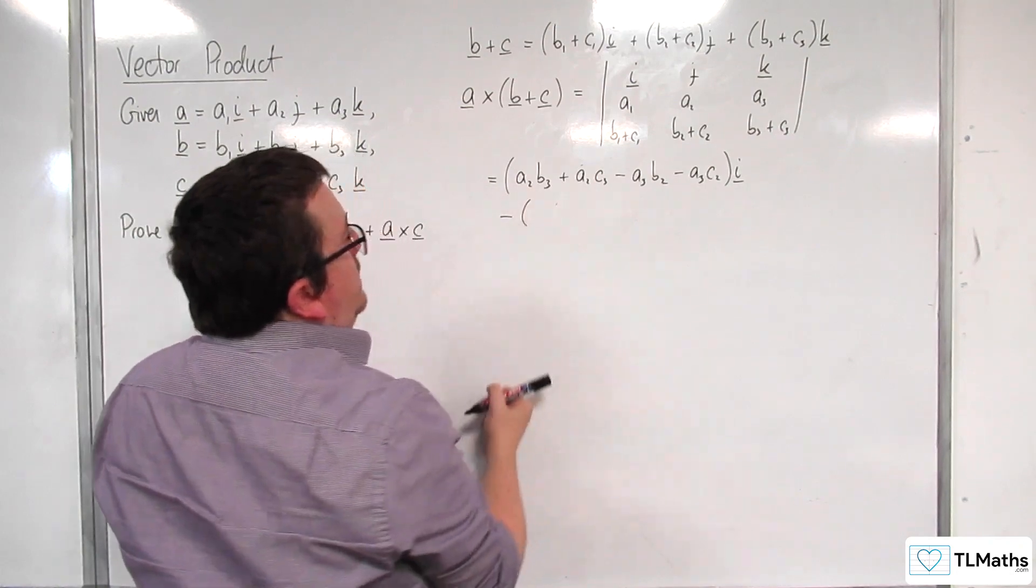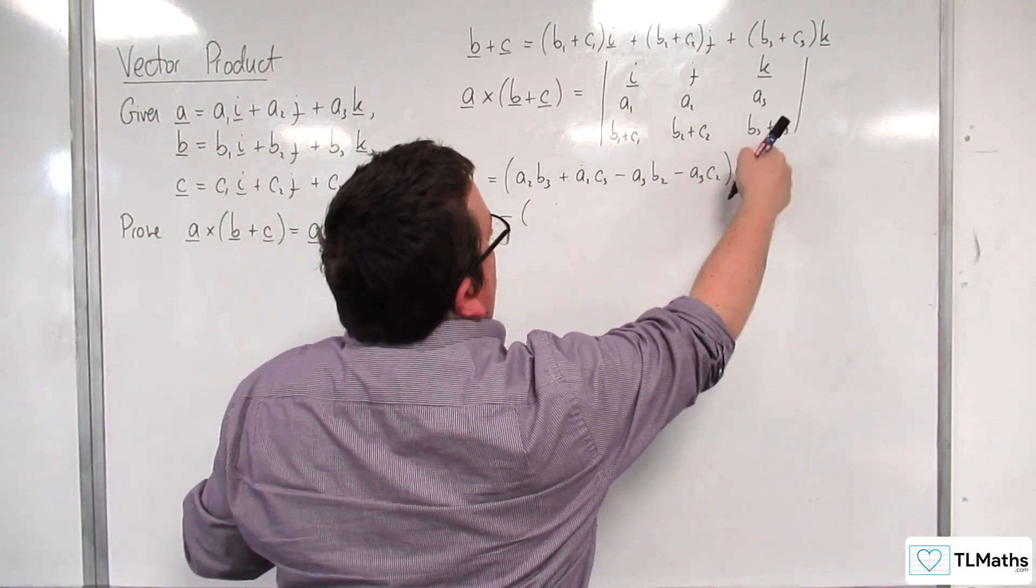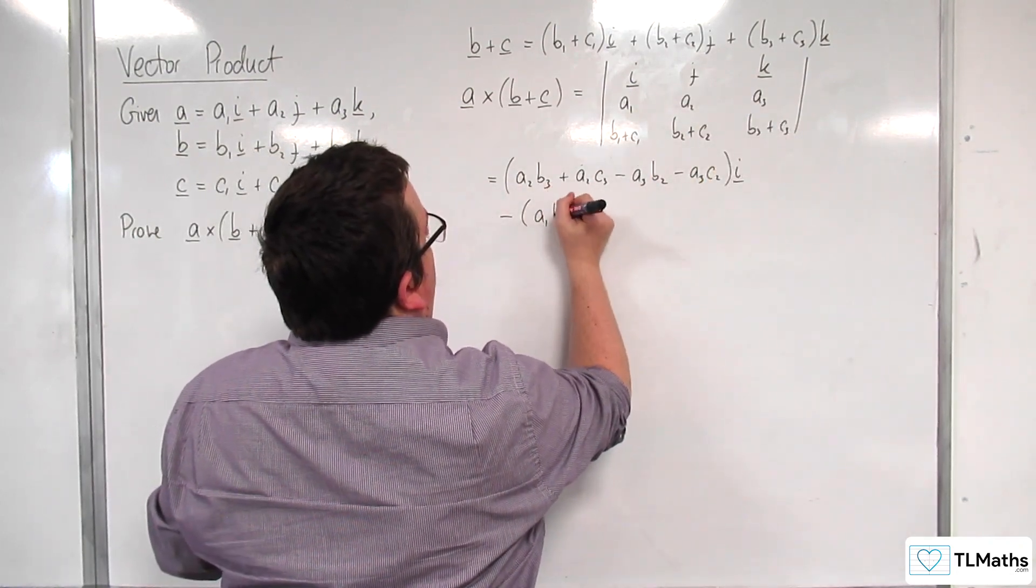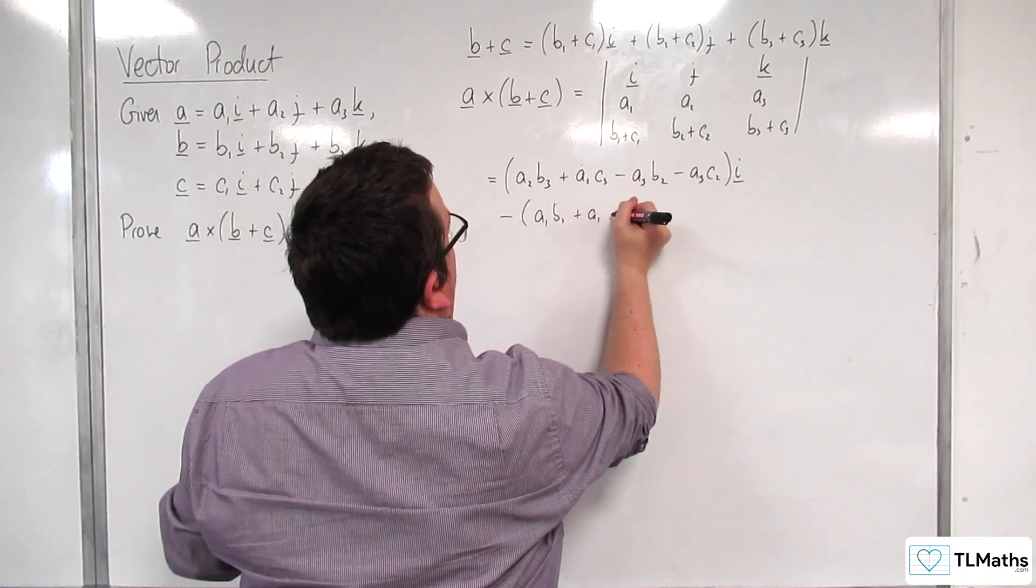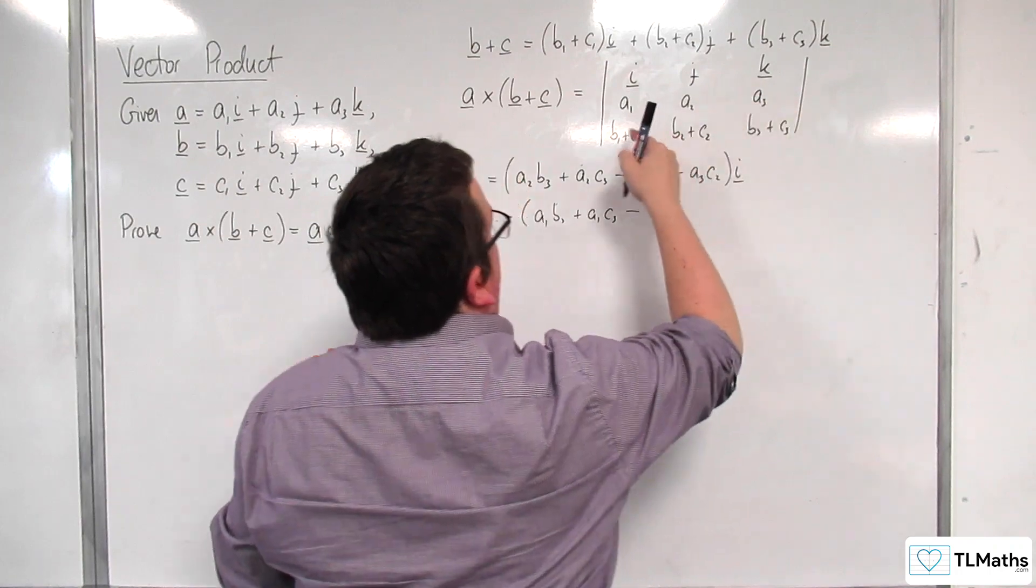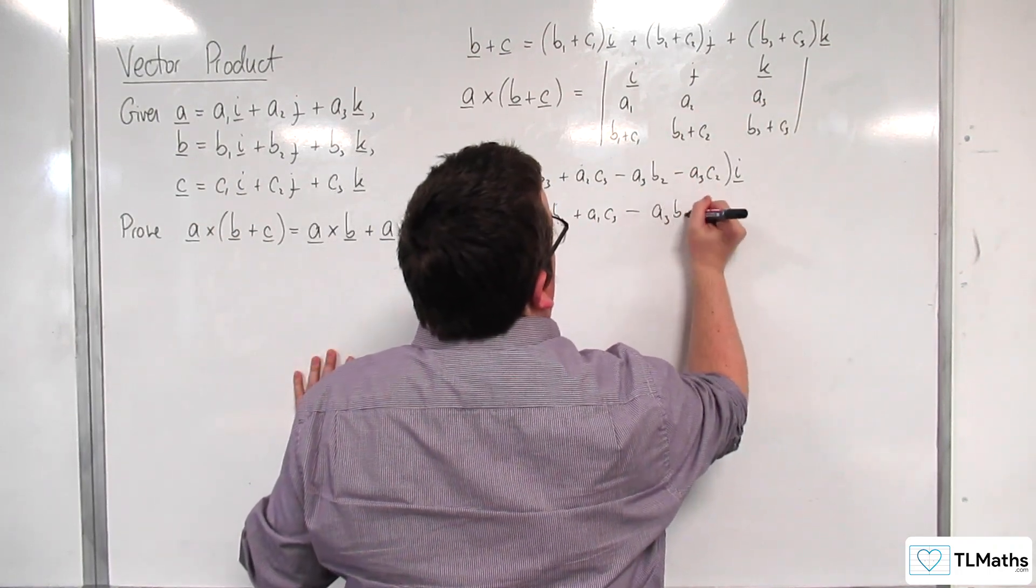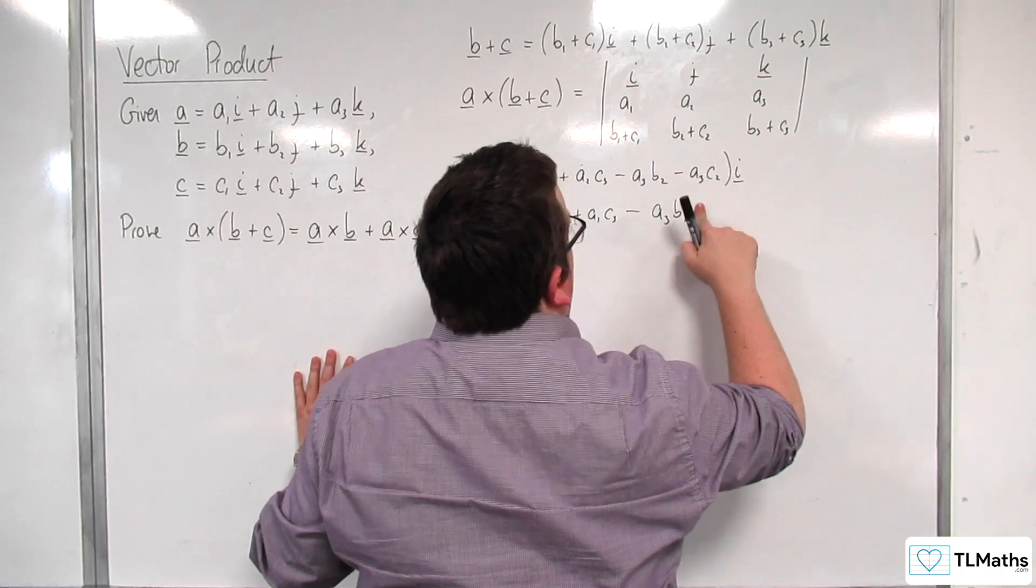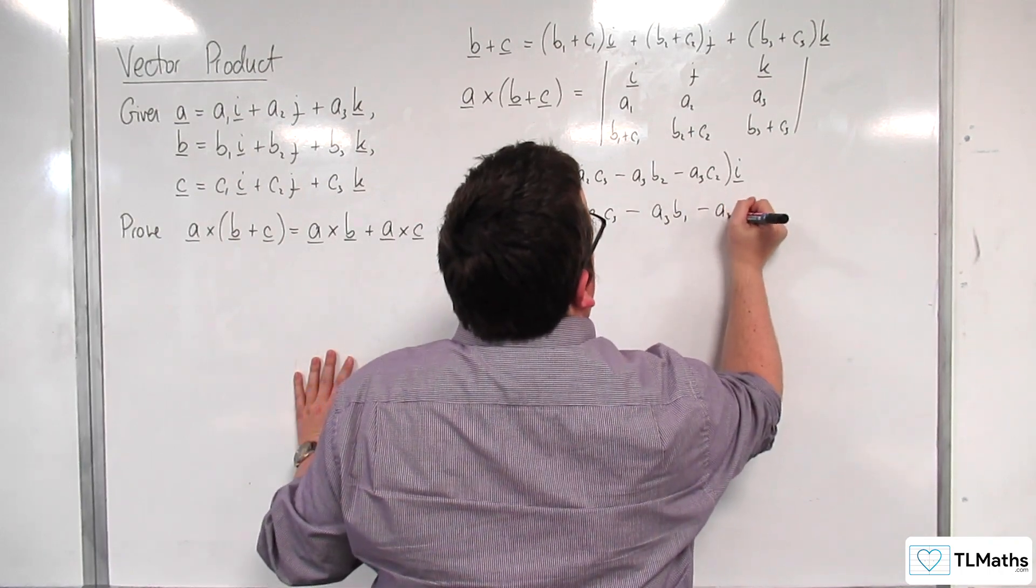Then we would have take away a1 times b3 plus a1 times c3. So that one times that one. Take away a3 times b1 plus c1. So take away a3b1, subtract a3c1 j.